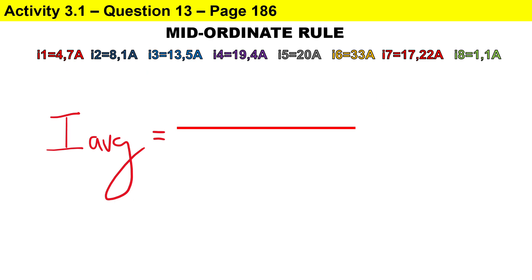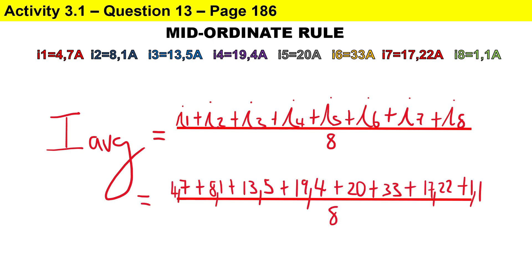To calculate the average value for the sine wave for current, we take all the mid-ordinate values and divide by the number of mid-ordinate values. We substitute the values: 4.7 amps plus 8.1 plus 13.5 plus 19.4 plus 20 plus 33 plus 17.22 plus 1.11, and divide by 8 because there are eight mid-ordinate values. Therefore, the average current for this sine wave is 14.628 amperes.